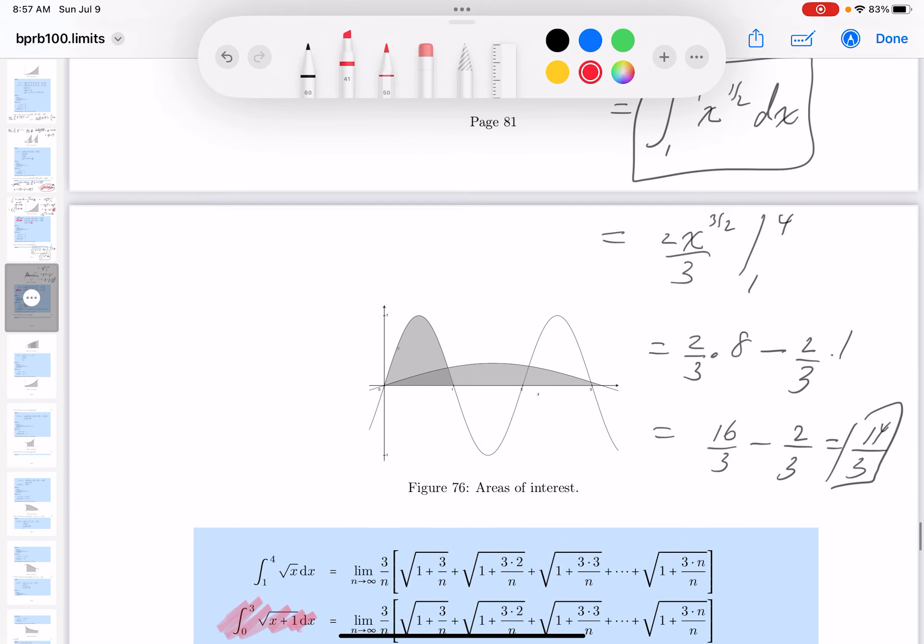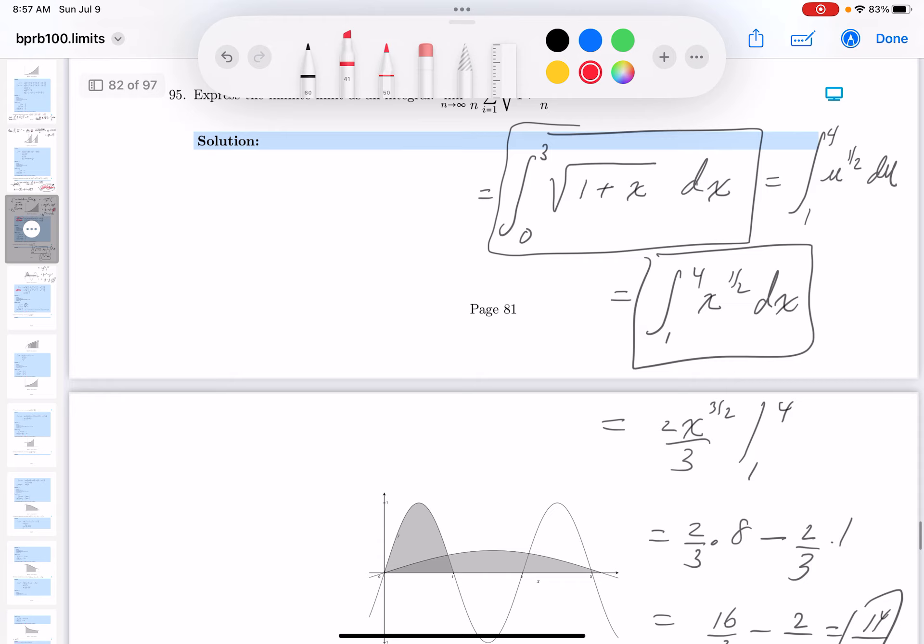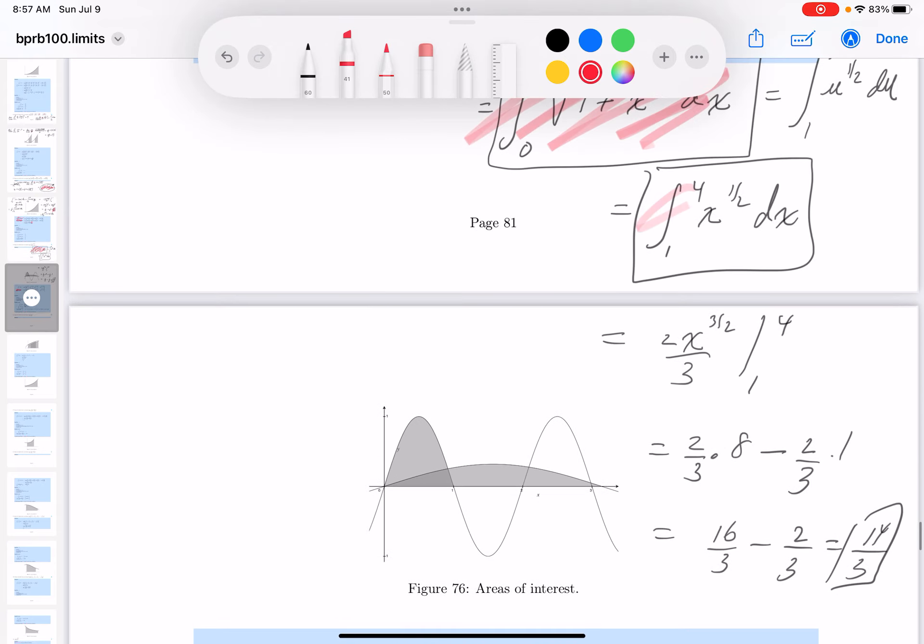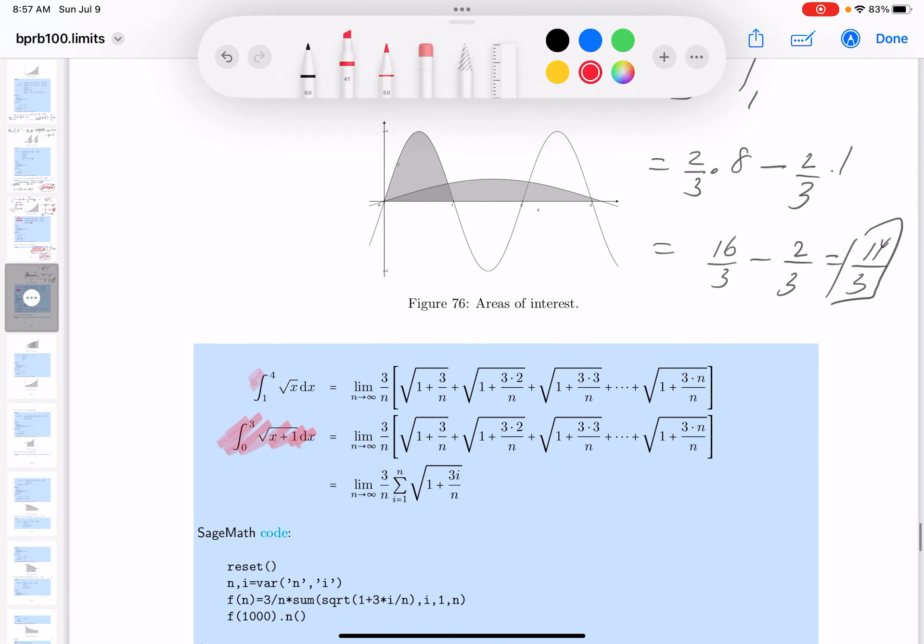I see that right over here. And let me make sure I'm saying that. 0 to 3. Yeah, I'm seeing that one. And 1 to 4, the root of x dx. And that's written over here. We're good to go to the next question. Thank you.